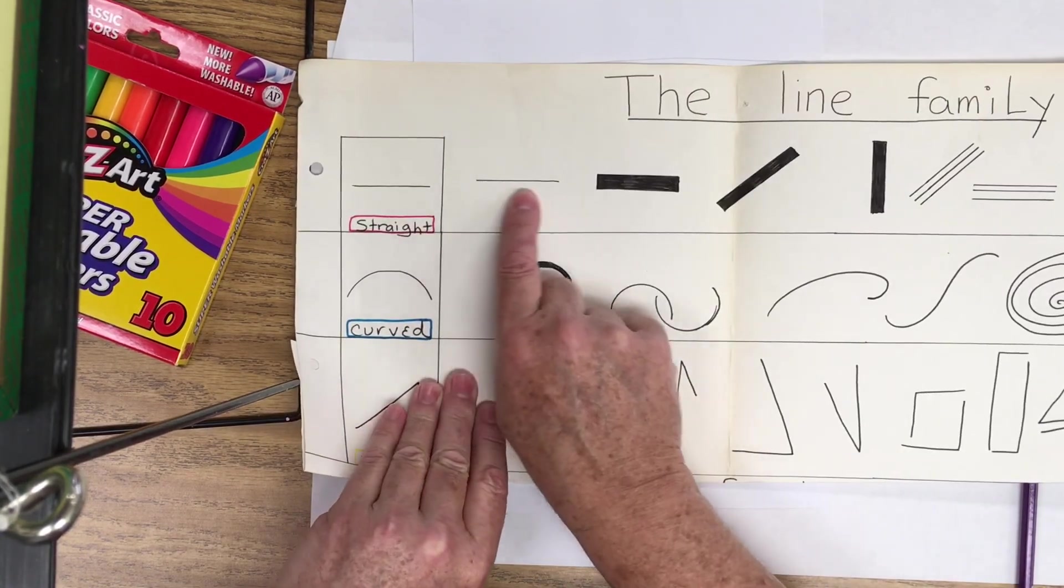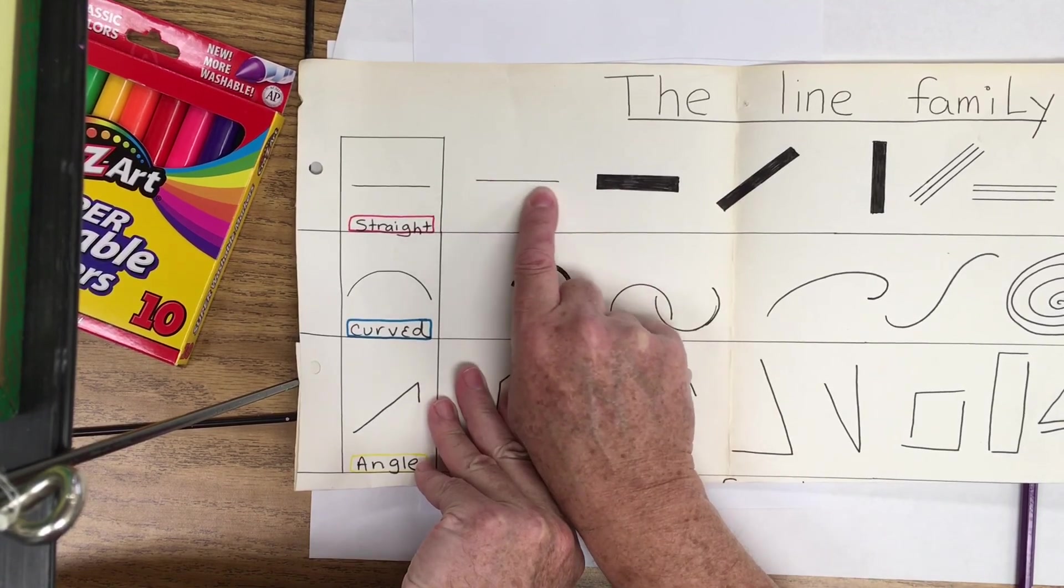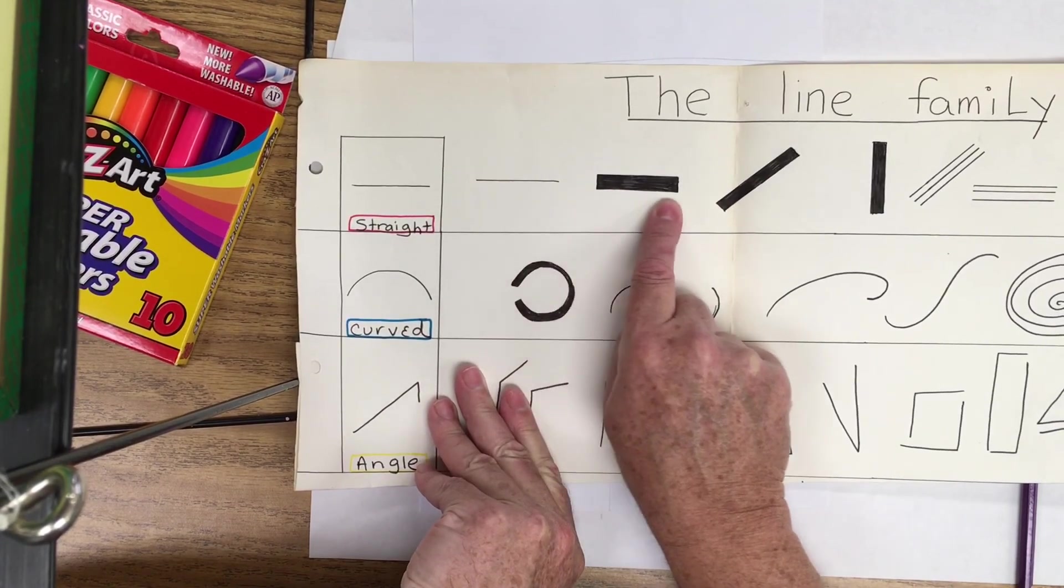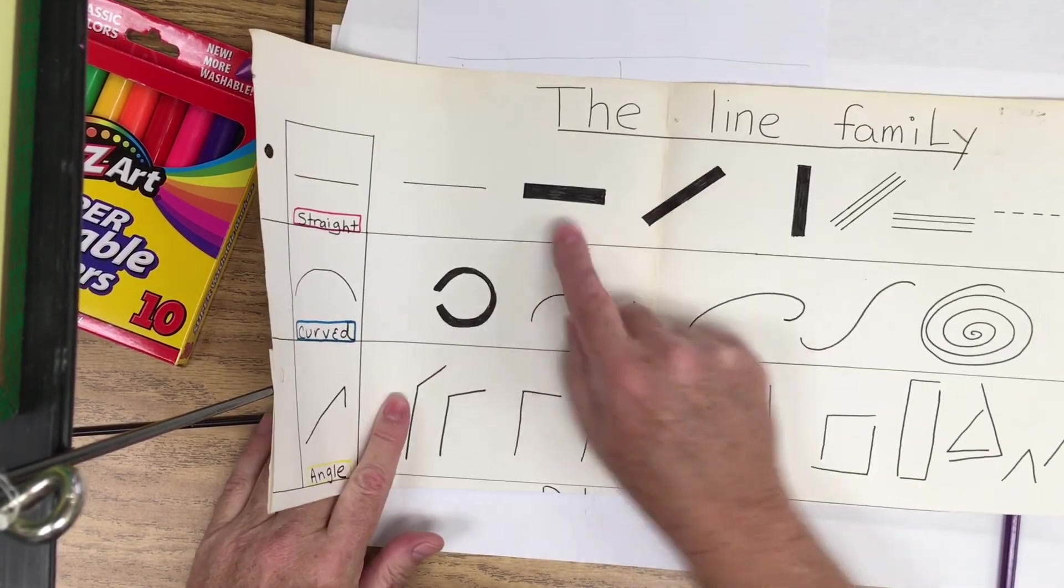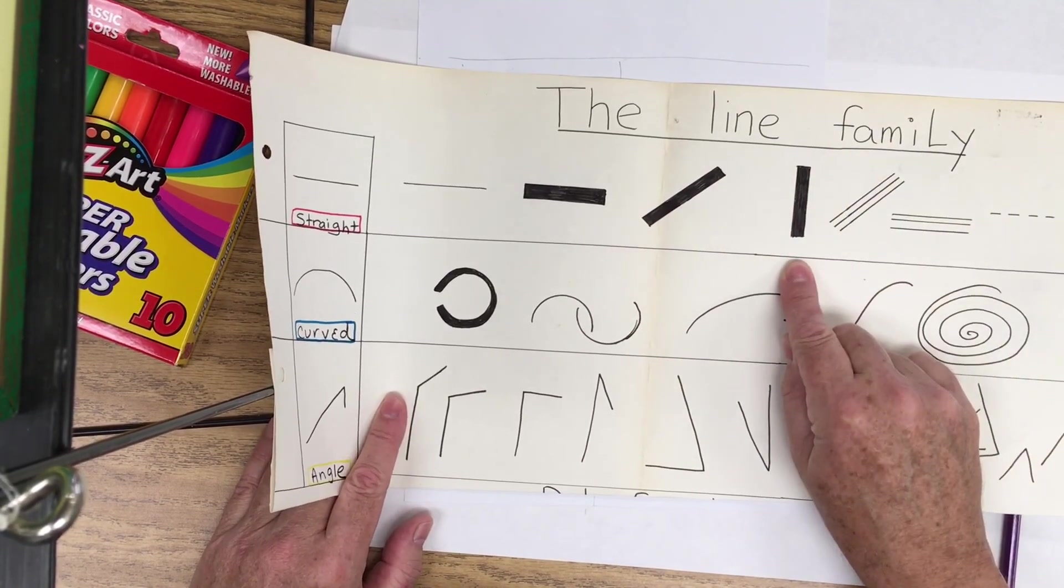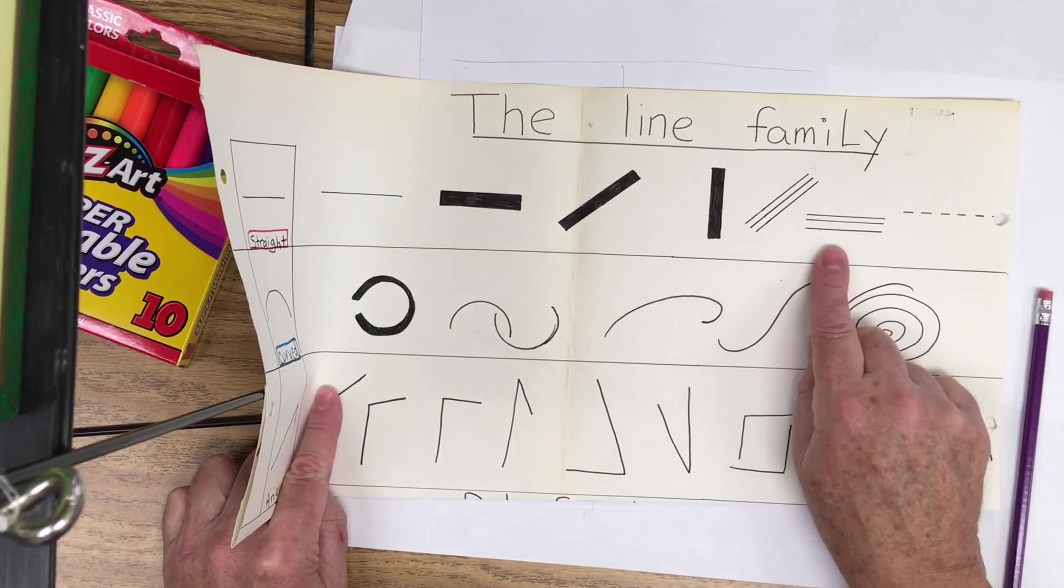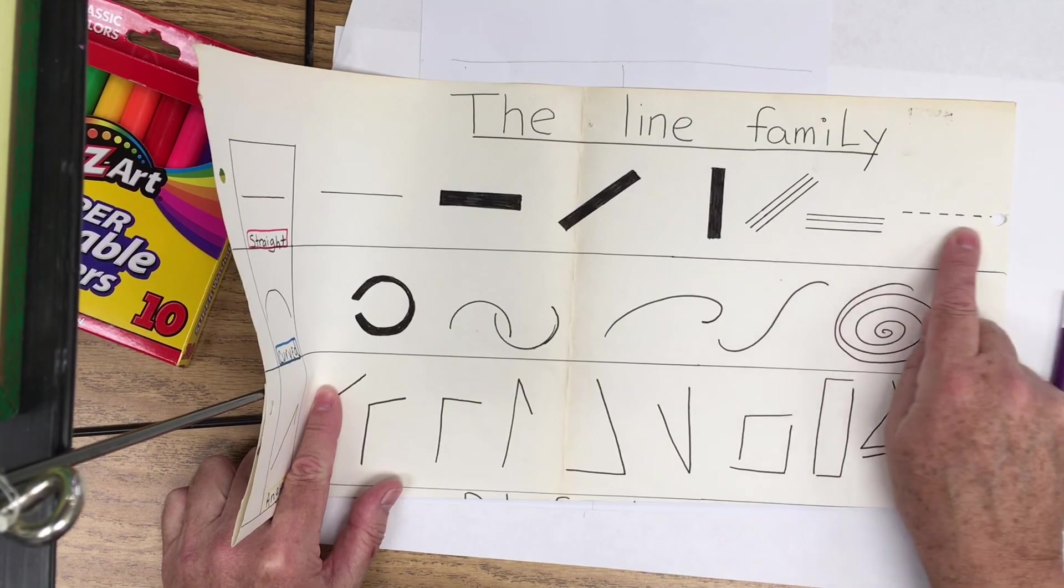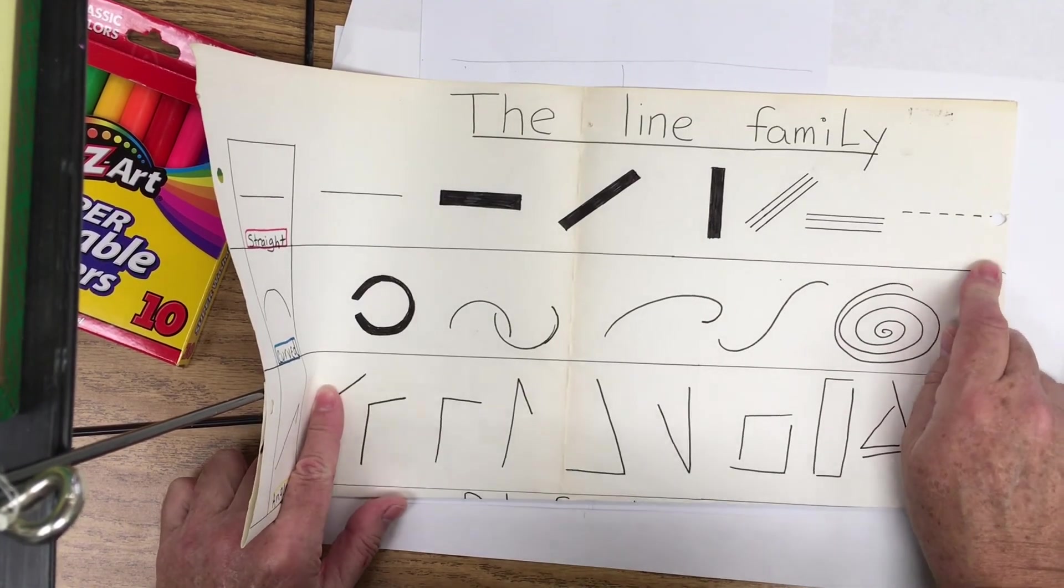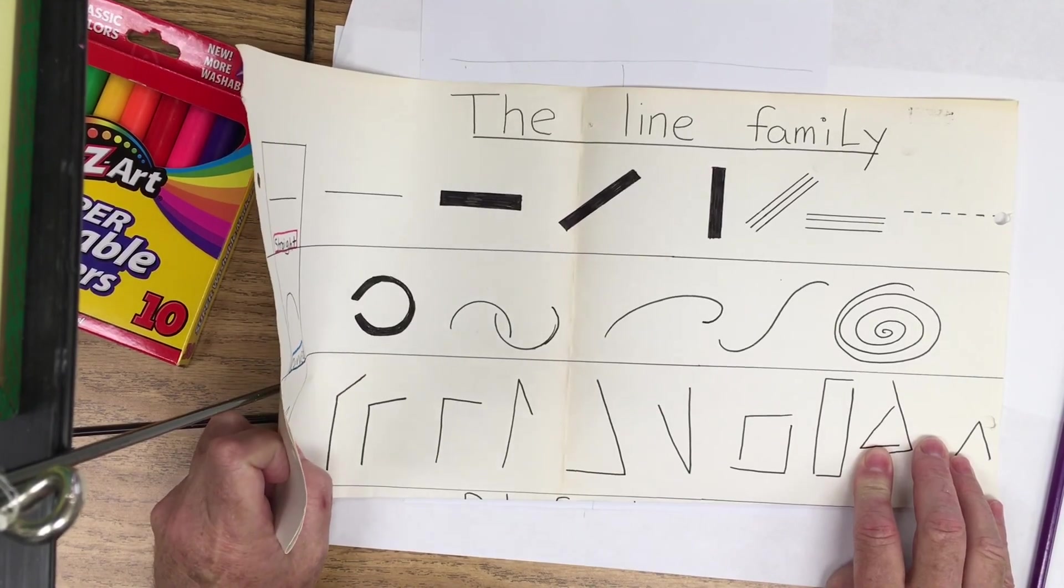So with a straight line, you can have horizontal straight lines. This is a very thin one. They can be thick. They can be diagonal. And they can be vertical. You can group the lines together. Here's a grouping of them. You can even make them dotted by leaving spaces in between. So we're going to be thinking of these kinds of lines for our picture.